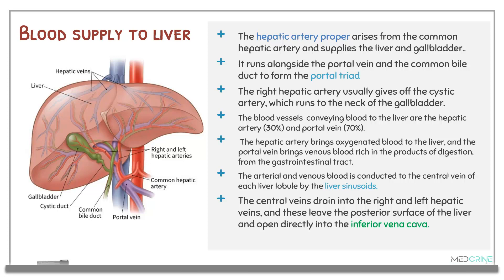The hepatic artery brings oxygenated blood to the liver, and the portal vein brings venous blood that is rich in products of digestion absorbed from the gastrointestinal tract. The arterial and venous blood is conducted into the central vein of each liver lobule by what is known as a liver sinusoid. The central veins then drain into the right and left hepatic veins, and this blood eventually leaves through the posterior surface of the liver and opens directly into the inferior vena cava.